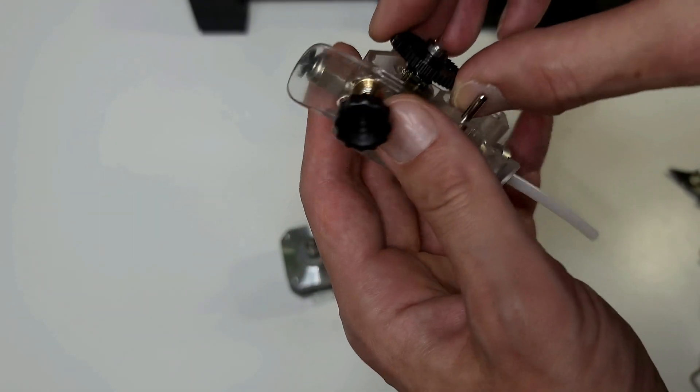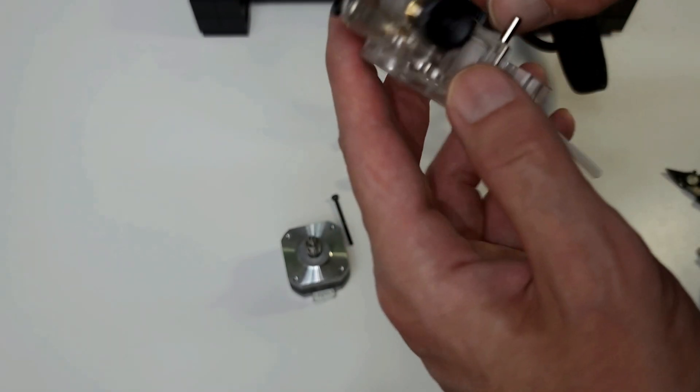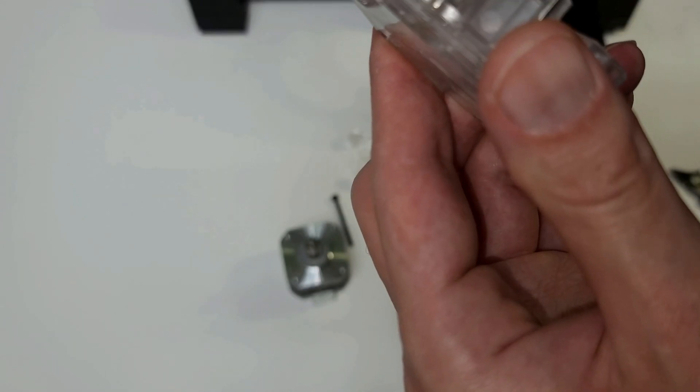It's very simple to pull apart and reassemble, making cleaning the extruder very simple if you get a lot of filament built up on the gears, which can happen after a while when you're printing.